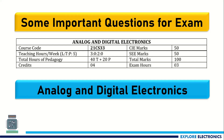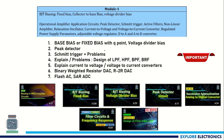Hello everyone, welcome back to Explore Electronics. In this video, let's see some important questions for the exam in the Analog and Digital Electronics subject. This is a third semester subject with the code 21CS33 under the new scheme. Let us get into Module 1, which is basically on BJT biasing and op-amp circuits.